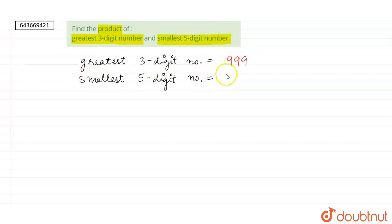Now in the question, product of these two numbers has been asked. So 999 multiplied by 10000 will be equal to...